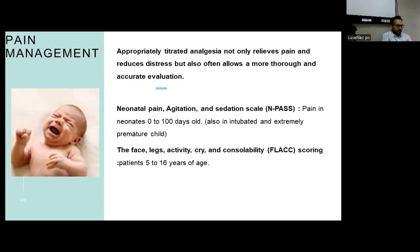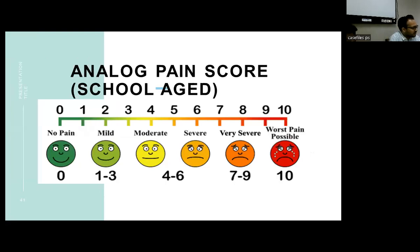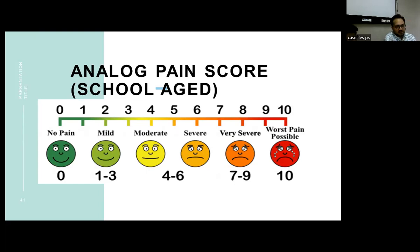The FLACC score comprises face, legs, activity, cry, and consolability. Similarly, there is a visual analog pain score for school-aged children, comprising numbers from 0 to 10, allowing children to recognize and self-report the severity of pain they are having, providing a subjective estimate of pain intensity.